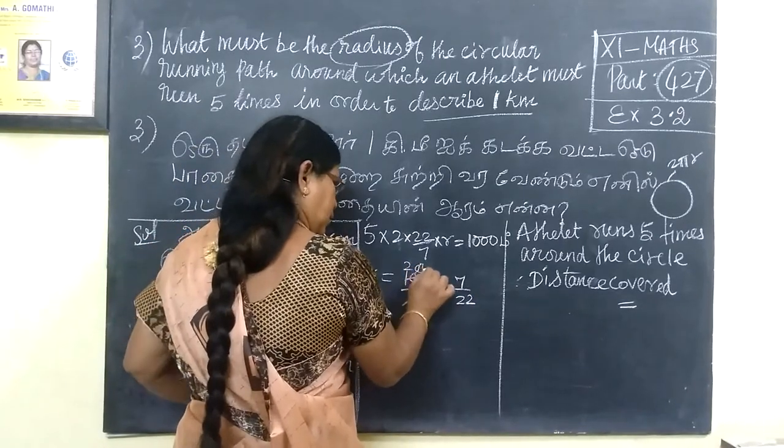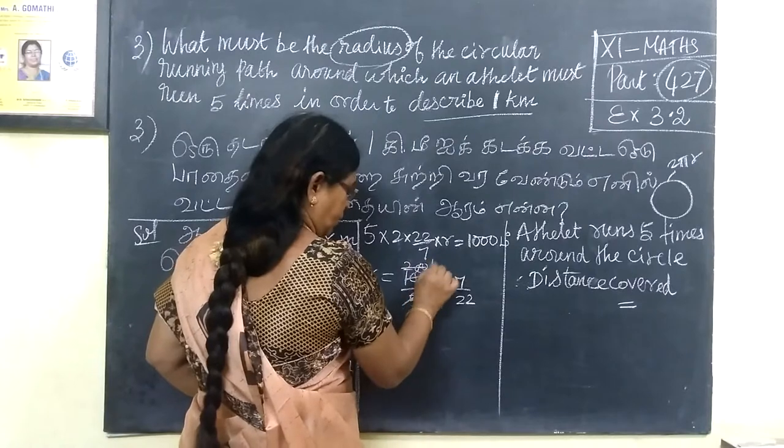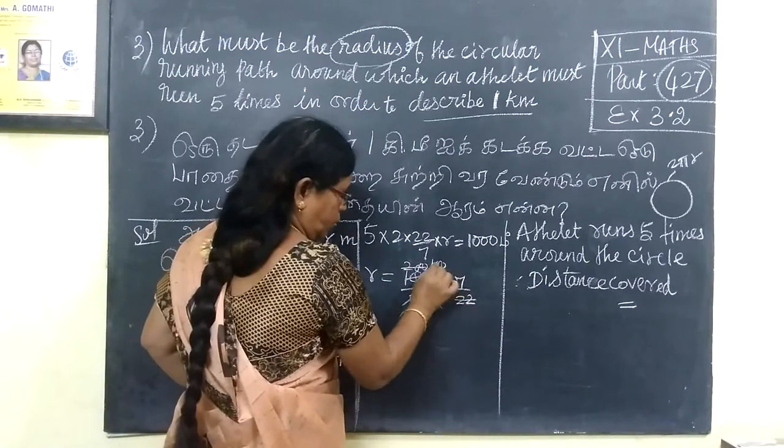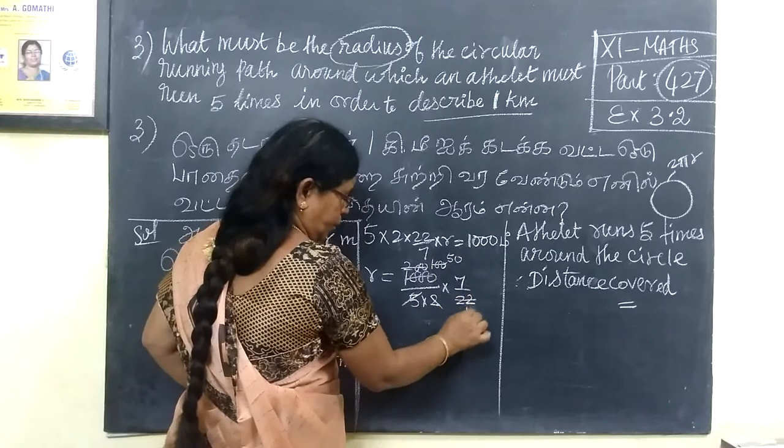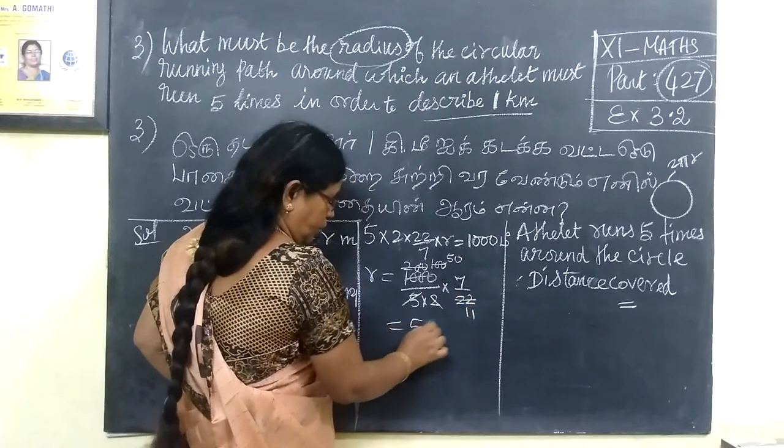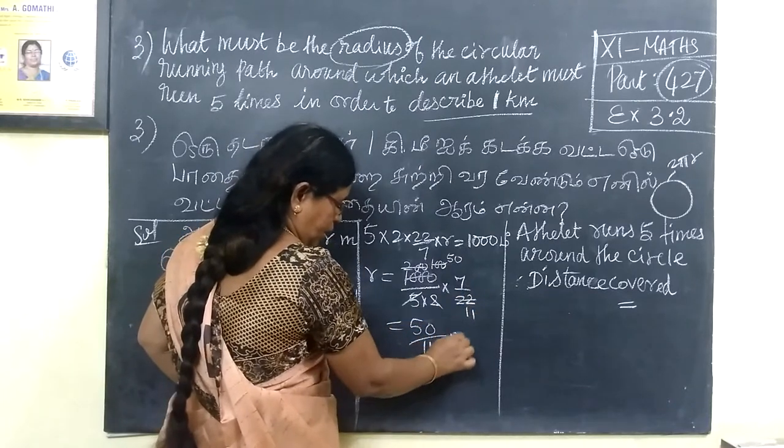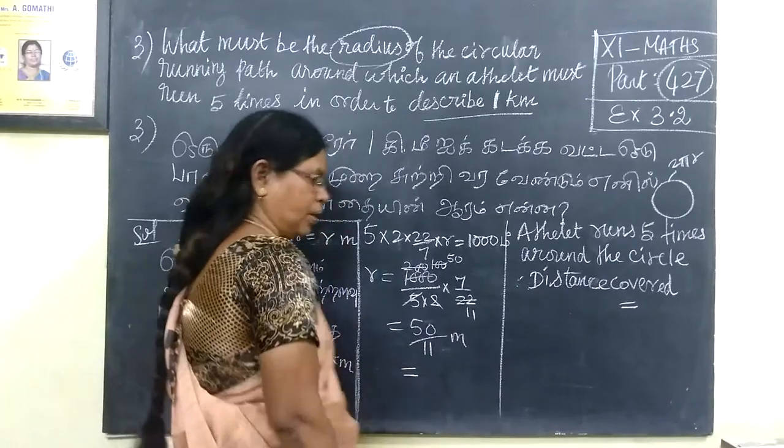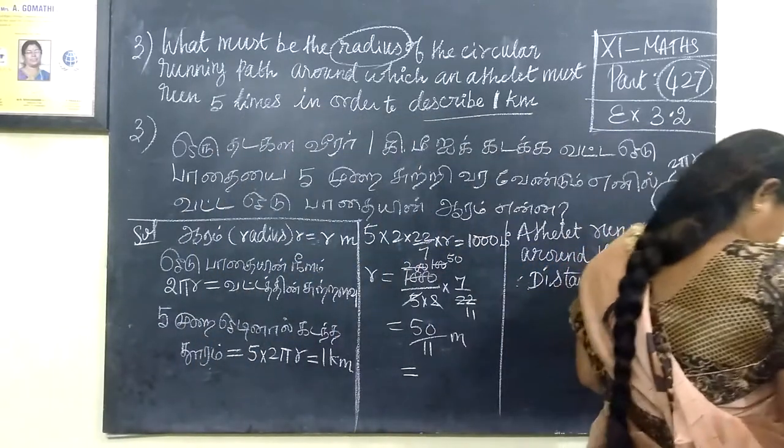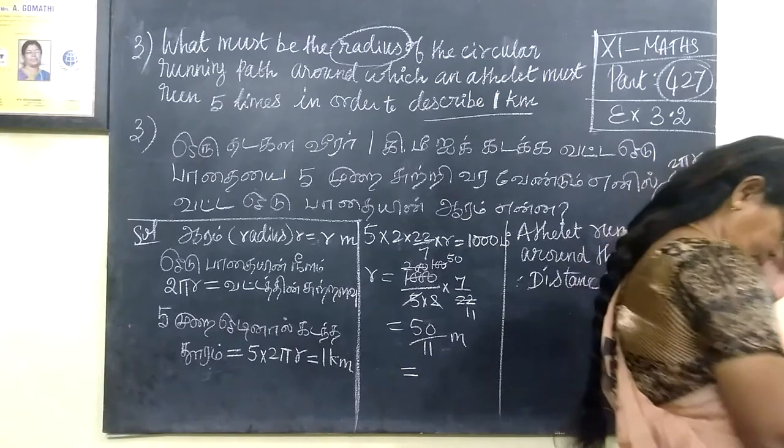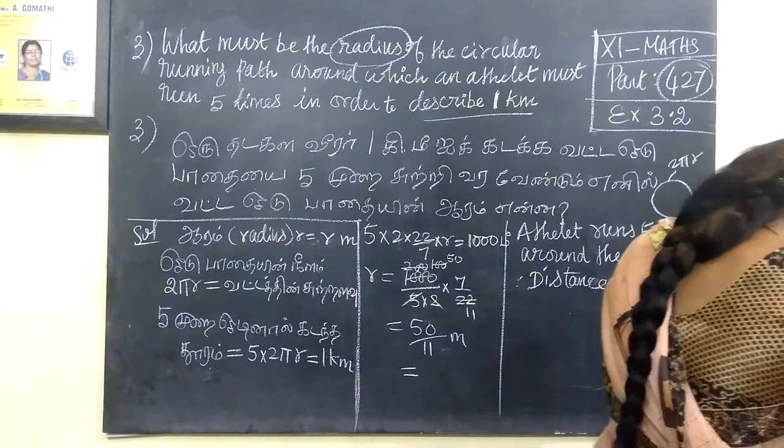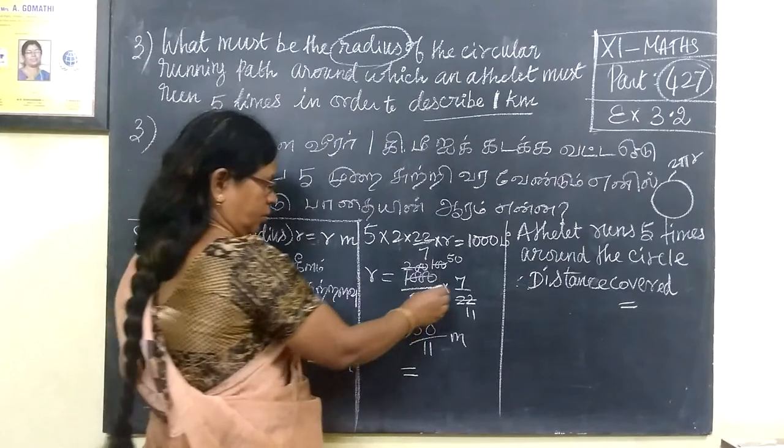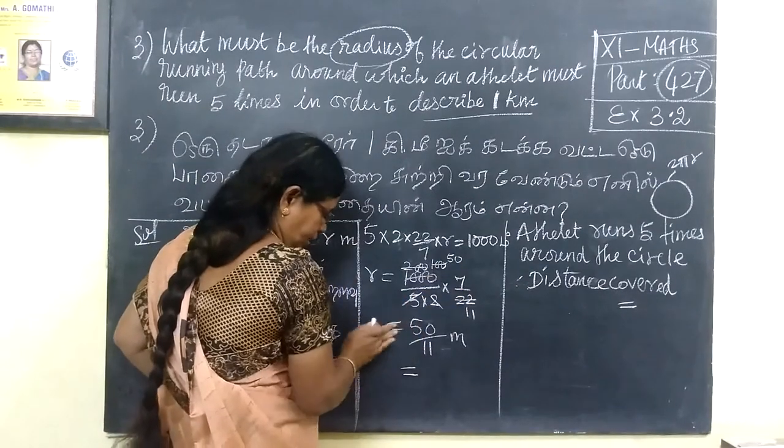If you cancel, 2 times 5 is 10, so equal to 50 by 11 meter. And approximately, 350 by 11.